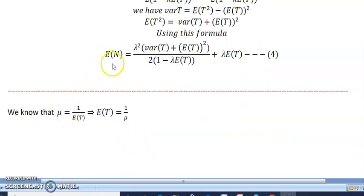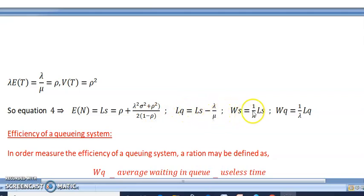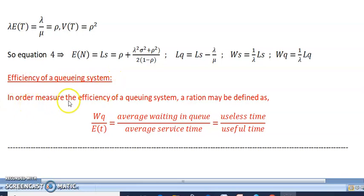Since E[n] equals Ls, and knowing that mu equals 1/E[t], so E[t] equals 1/mu, lambda·E[t] equals lambda/mu equals rho, and Var(t) equals sigma². The PK formula gives: Ls equals rho plus lambda²·sigma² plus rho² all divided by 2·(1 minus rho). From this: Lq equals Ls minus lambda/mu, Ws equals Ls/lambda, Wq equals Lq/lambda. The efficiency of the queuing system is defined as: aeration equals Wq divided by E[t], which is average waiting time in queue divided by average service time, representing useless time divided by useful time.